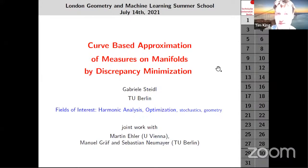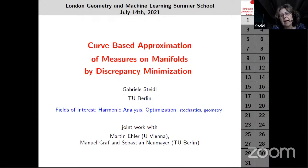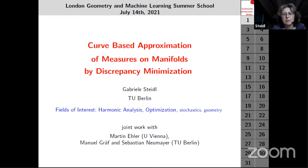I will speak about curve-based approximation of measures on manifolds by discrepancy minimization. I am from the Technical University of Berlin. My original fields of interest are harmonic analysis and optimization, and recently stochastics and geometry have come in. This work is joint with Martin Ehler from the University of Vienna, and Manuel Gref and Sebastian Neumeier from my group.